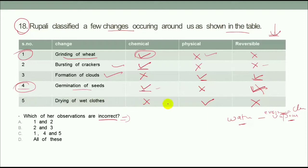Drying of wet clothes is a physical change, but it is a reversible change too. If we have dry clothes, then we can wet it. If we have wet clothes, then we can dry it again. This is a reversible change. This statement is incorrect. My answer is Option C: first, fourth, and fifth.